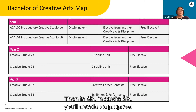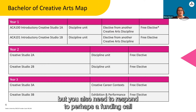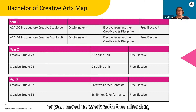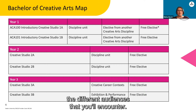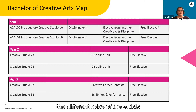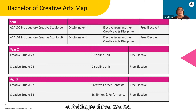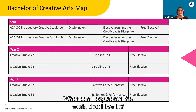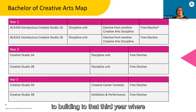Then in Studio 2B, you'll develop a proposal because you'll start working to an external brief. You always have to work with your own passion and inspiration, but you also need to respond to a funding call, or work with a director or choreographer and their vision. We also prepare you to think about different roles and audiences. In ACA 100, we start to look at core concepts — we make self-portraits, autobiographical works. You're really thinking about what do I want to say, what can I say about the world I live in. The course, in some sense, is spiraling — your development through it is spiraling, picking up themes and skills as you go, building to that third year where it becomes more about launching you in the world.